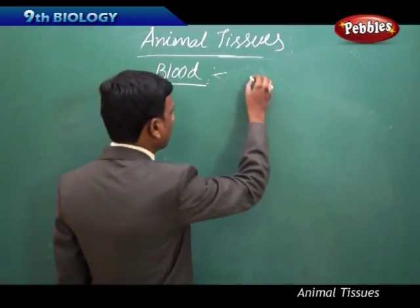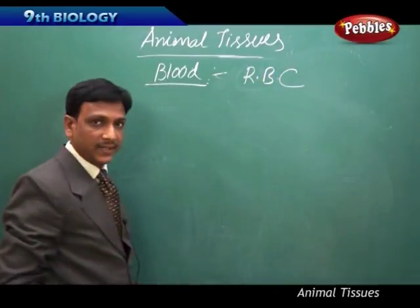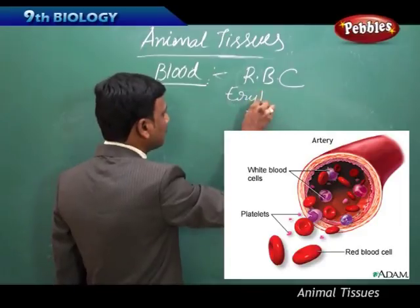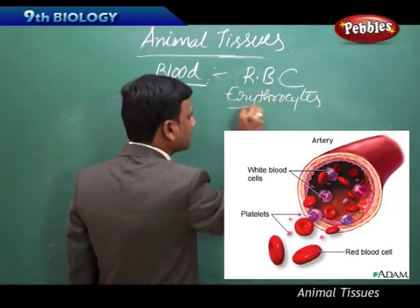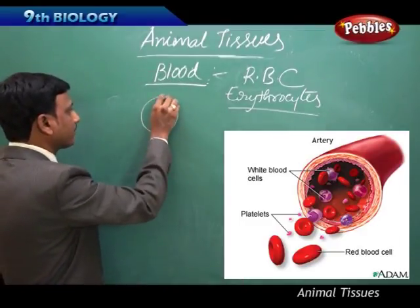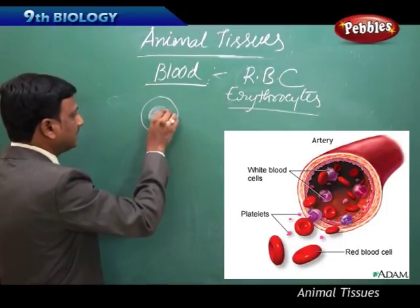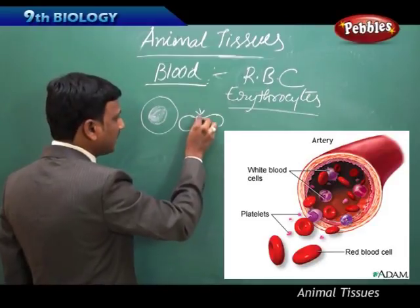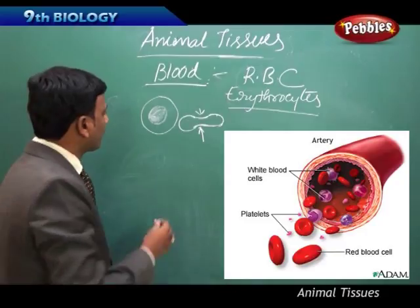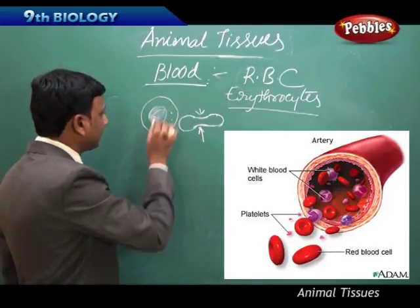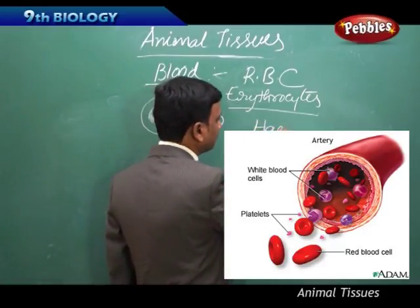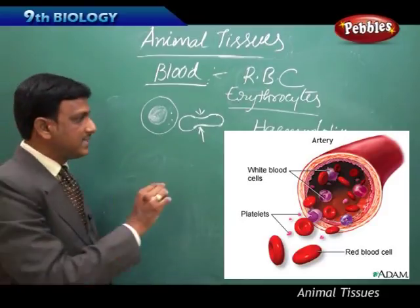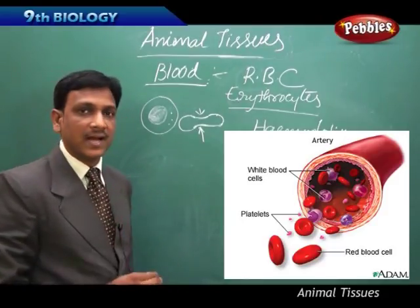Now let us discuss the cellular part of the blood. The first is RBC — red blood cells, also called erythrocytes. These are disc-shaped cells compressed at the middle part on both sides, concave at the center. These cells do not have a nucleus. They are red in color because of the pigment hemoglobin, which binds oxygen and transports it to different parts of the body.